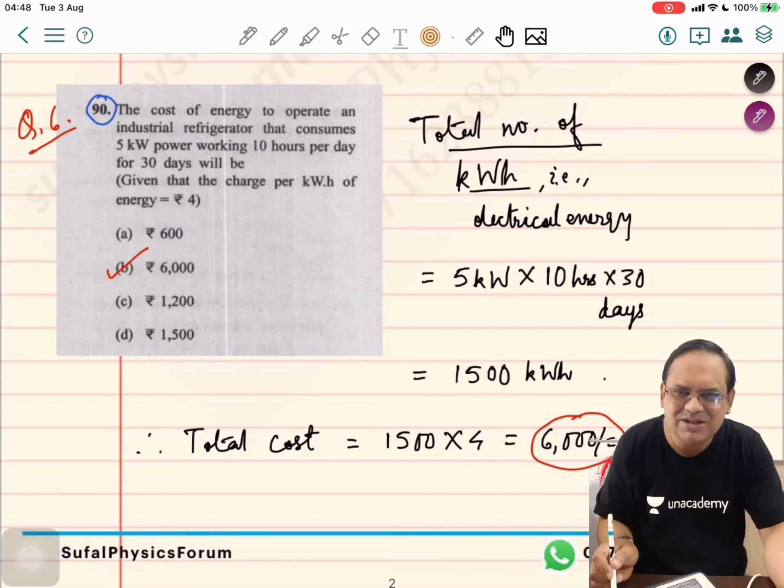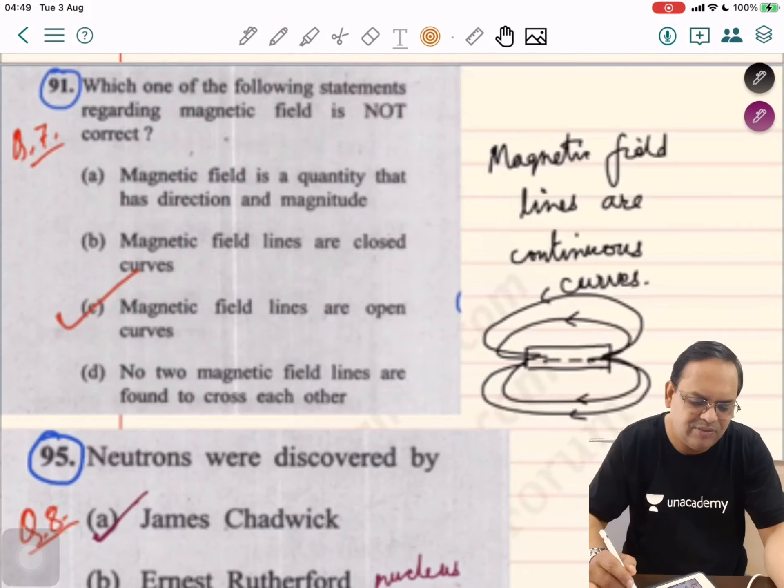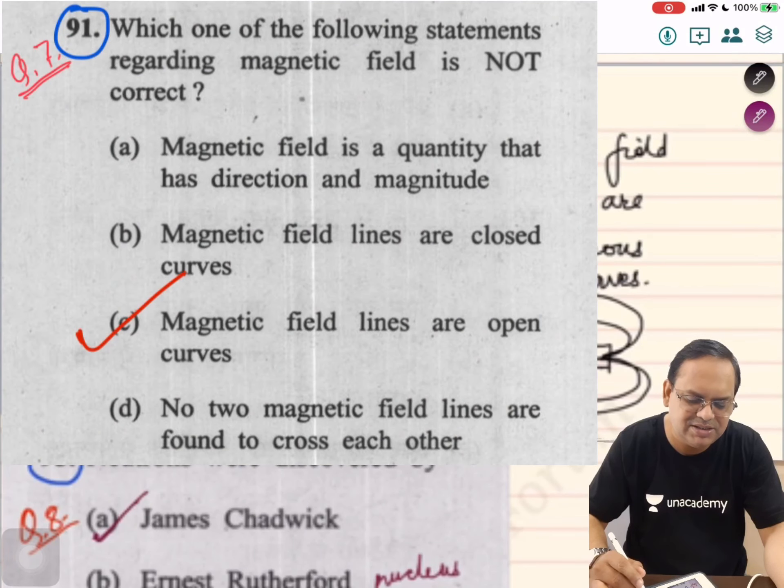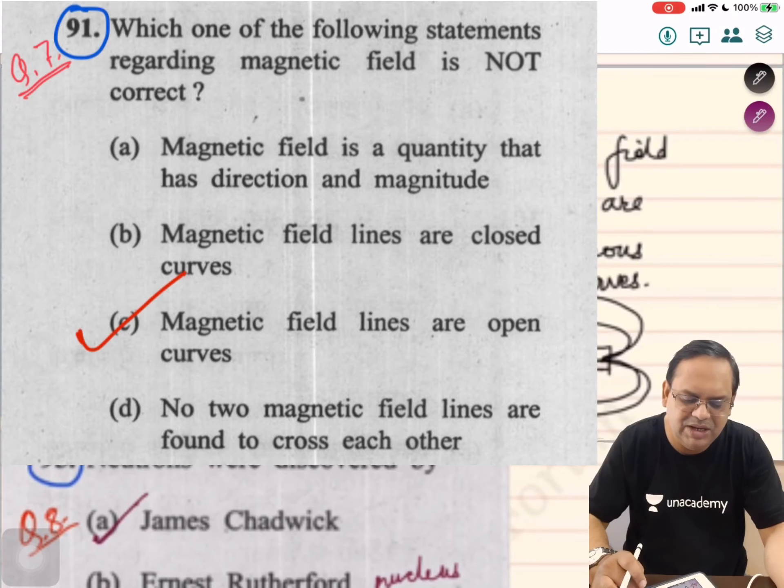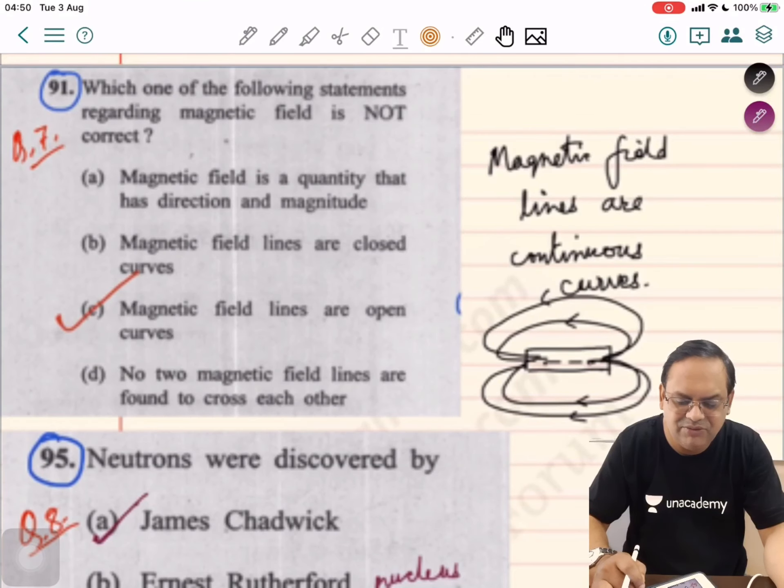Which one of the following statements regarding magnetic field is not correct? Magnetic field is a quantity that has direction and magnitude. Magnetic field lines are closed curves. This is also factual knowledge. Magnetic field lines are always continuous curves, which we learn in physics, whereas electric field lines are discontinuous curves.